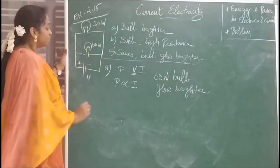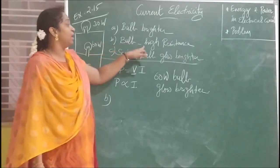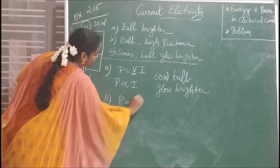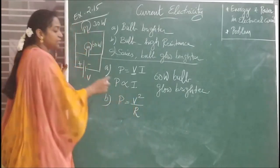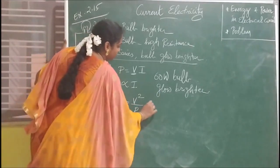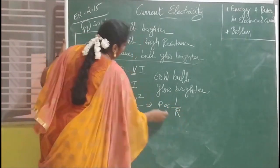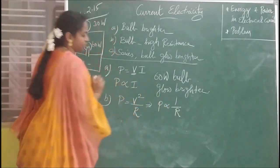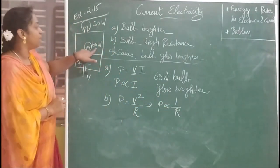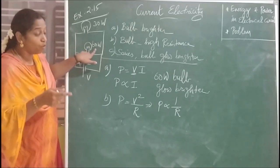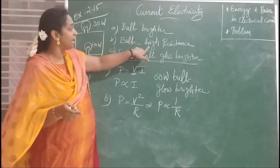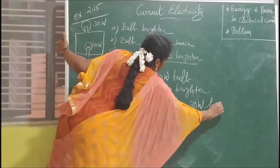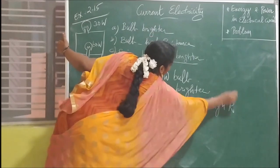For the second question — which bulb has higher resistance — we use P = V²/R. Since voltage is the same, R is inversely proportional to P. The 60-watt bulb has more power and therefore lower resistance. Therefore, the 30-watt bulb will have higher resistance.